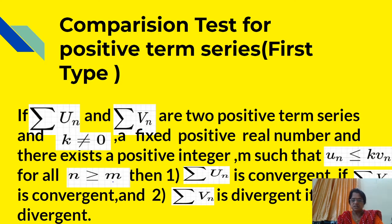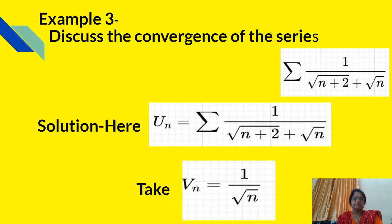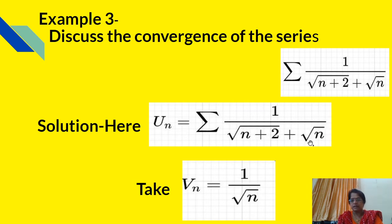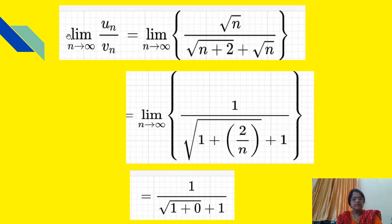Now we will see some sums depending upon the comparison test. Example 3: Discuss the convergence of the series Σ 1/(√(n+2) + √n). Here un = 1/(√(n+2) + √n). We take vn = 1/√n. Now we will find the limit as n tends to infinity of un/vn.